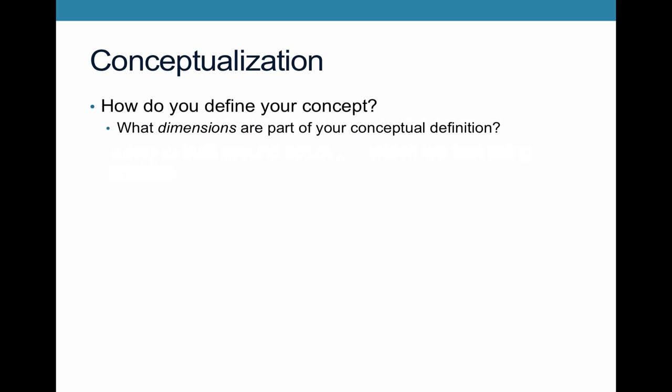Dimensions are the criteria involved in defining a concept. For example, Theda Skocpol's concept of social revolution involves two dimensions: one involves a change in state structures — a reinvention of the political order — and the second is a change in social structures, or a reorganization of social hierarchies and patterns. It's not simply that she has a single definition; there are two dimensions involved. You should think about how your concept would vary: for Skocpol, you could have no revolution, a political revolution, or a social revolution, depending on how those dimensions match up.